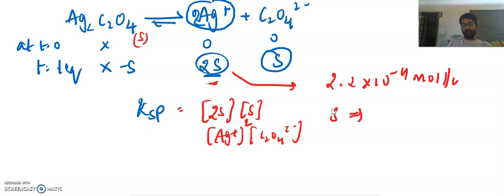So s becomes 1.1 into 10 power minus 4 mole per litre. That means s is the concentration of C2O4.